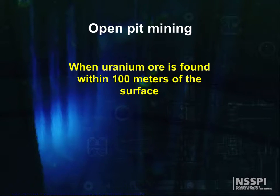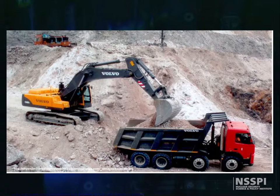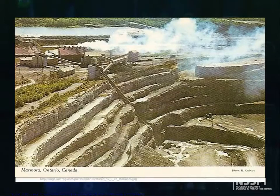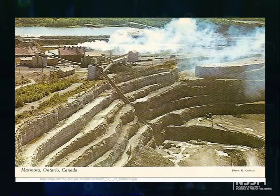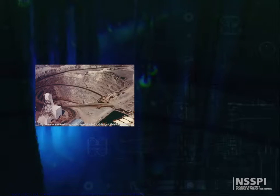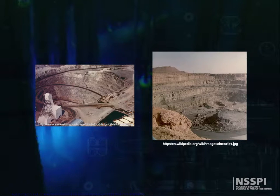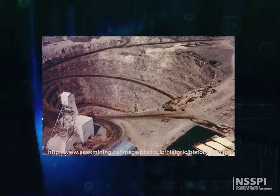When uranium ore is found within 100 meters of the surface, open-pit mining is usually used. Open-pit mining begins by removing the overburden and waste rock on top of the ore body to expose the hard rock. Then a pit is excavated to expose the ore. The walls of the pit are mined in a series of benches, or steps, to prevent collapse. To mine each bench, holes are drilled in the rock and loaded with explosives, which are detonated to break up the rock. The resulting broken rock is then hauled to the surface in large trucks that carry up to 200 tons of material at a time.